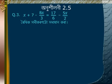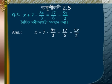Problem 3: Solve x plus 7 minus 8x/3 is equal to 17/6 minus 5x/2. Transposing terms: x minus 8x/3 plus 5x/2 is equal to 17/6 minus 7.